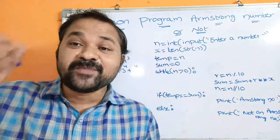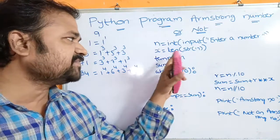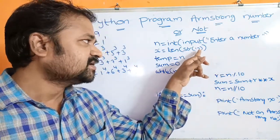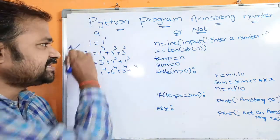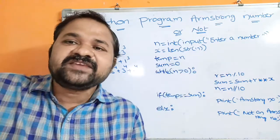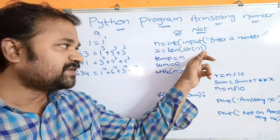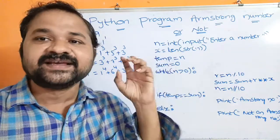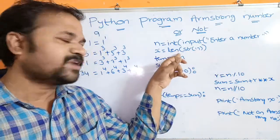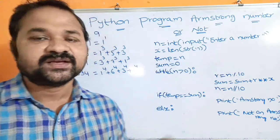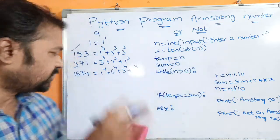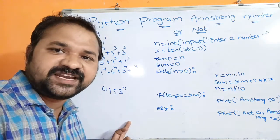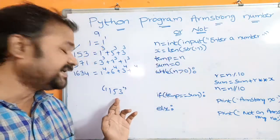Next we need to calculate the number of digits. In Python we have the len function, but len is applied only on strings. So we use len(str(n)). If n is 153, then str(153) converts it to its string representation, and len returns 3. So x contains 3, representing the number of digits.